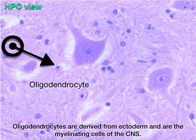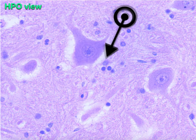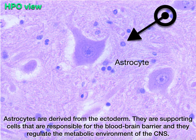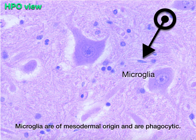Oligodendrocytes are identified by their dark staining, small nuclei. They are derived from the ectoderm and are the myelinating cells of the central nervous system. Astrocytes are identifiable by their large light-staining nucleus; they are supporting cells responsible for the blood-brain barrier and regulate the metabolic environment of the CNS. Microglia can be identified by their elongated nucleus and are of mesodermal origin and are phagocytic.